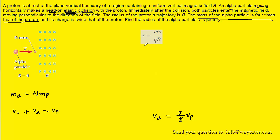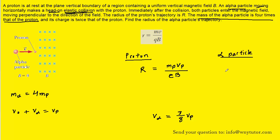From our current studies, when a charged particle moves into a magnetic field it moves in a circular path, and the radius equals mass times velocity divided by charge times magnetic field. Applying this to the proton, its radius R equals the mass of the proton times the final velocity of the proton, divided by one elementary charge e times the magnetic field B. For the alpha particle, its radius equals its mass times its final velocity divided by its charge, which is two e — twice that of the proton — times the magnetic field B.